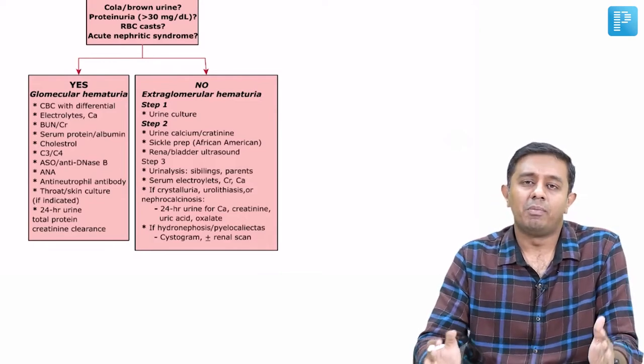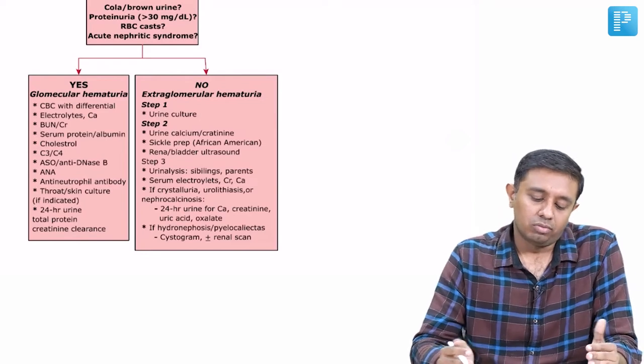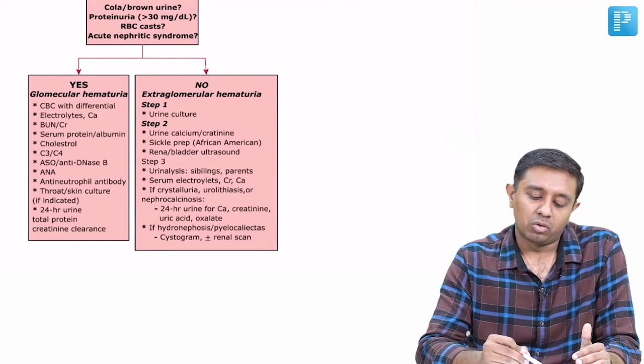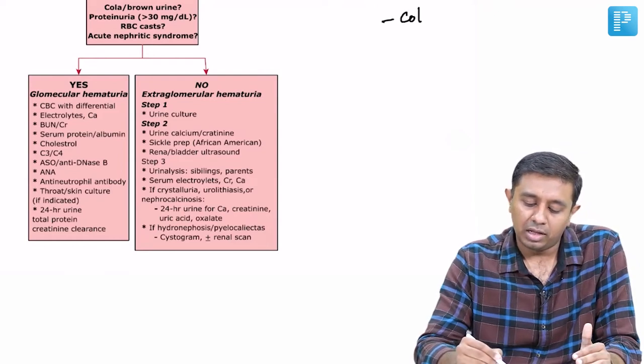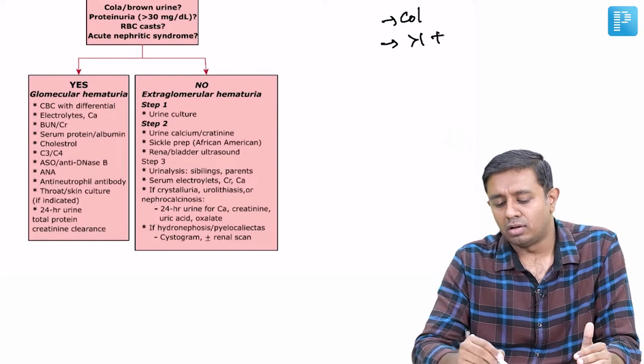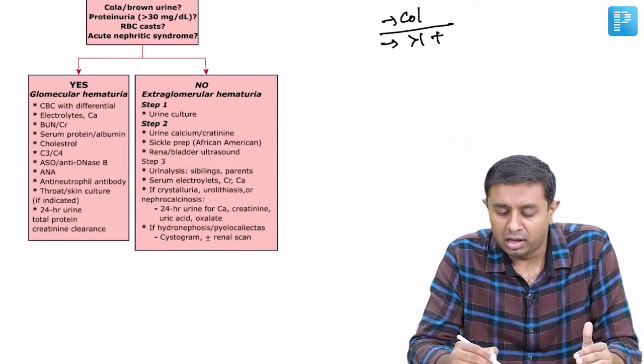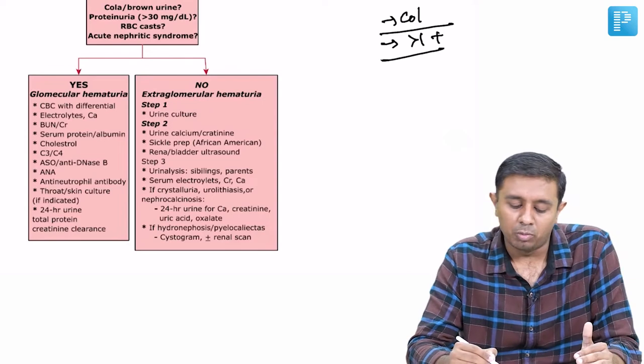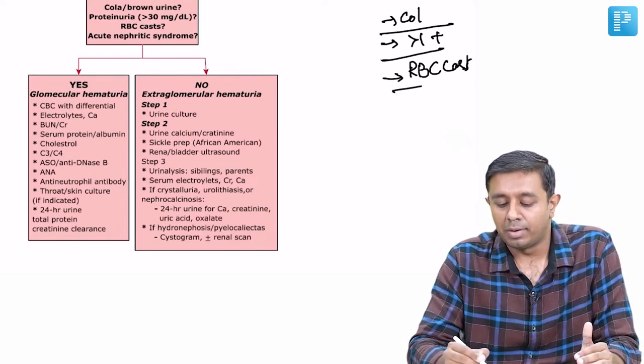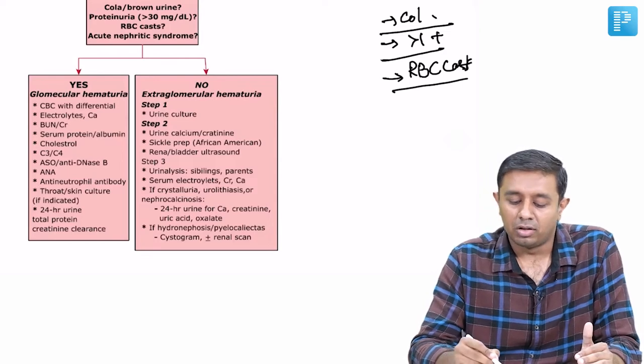Whenever we have the dilemma, we would like to assess these few things: whether there is coca-cola colored urine that is present, again very sensitive of PSGN; more than one plus protein, if present in the urine, signifies glomerular proteinuria; or more than 30 milligram percent presence of RBC casts. The RBCs that are present are pathognomonic of glomerular disease.